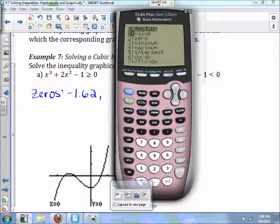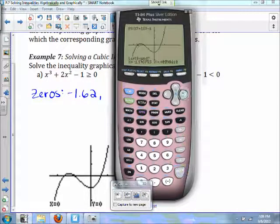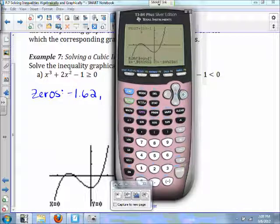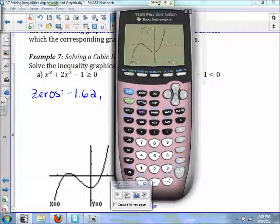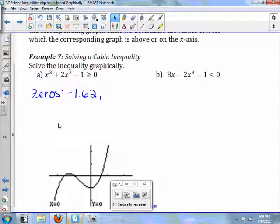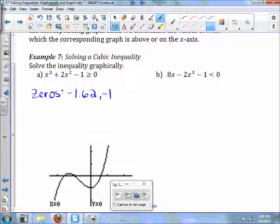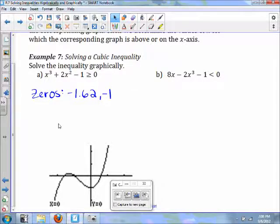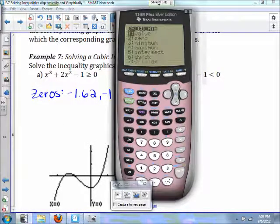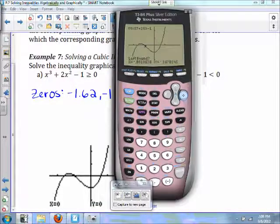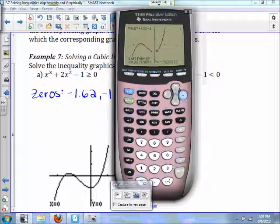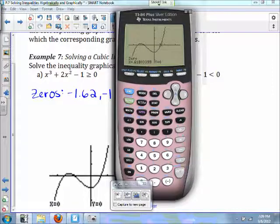To find my second zero, I'm going to do the same process. At negative 1, my third zero will be at 0.62.